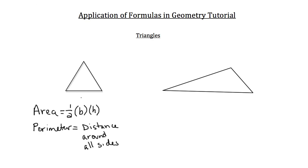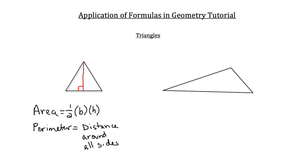The base of a triangle can be any one of its sides. The height is calculated by extending a line from one vertex of the triangle to the opposite side, hitting that opposite side at a 90-degree angle. Anytime you do that from any vertex you get the height of the triangle.